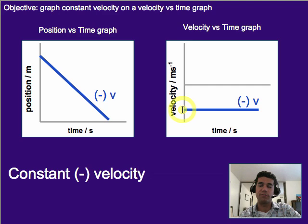but on a velocity graph, we just need a flat line that is down at a negative value. Again, it's a flat line, but it's a negative flat line.